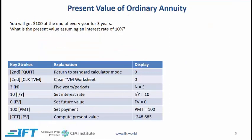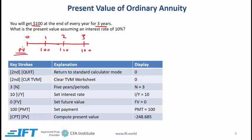Next, present value of an ordinary annuity. You will get $100 at the end of every year for 3 years and we need to calculate the present value. So at time 0, time 1, time 2, time 3, you are getting $100, $100, and $100, and we want the present value at time 0. This is an ordinary annuity so we assume cash flows are happening at the end of every period.